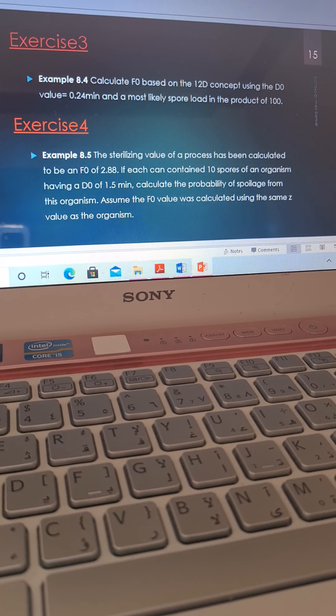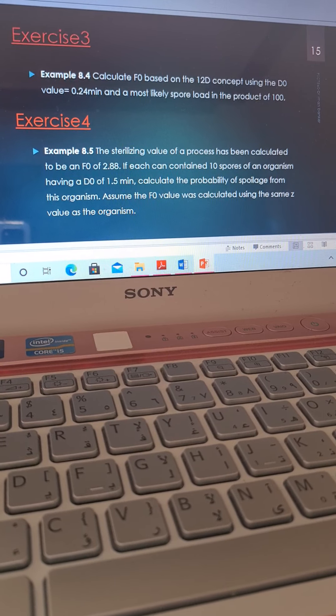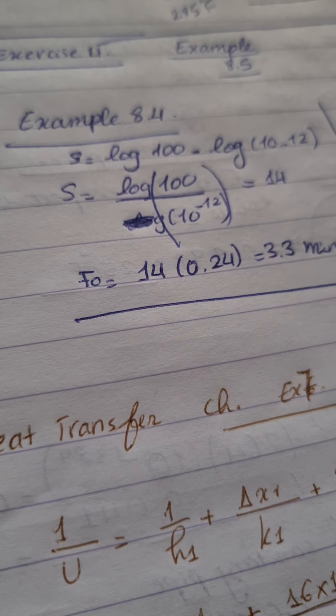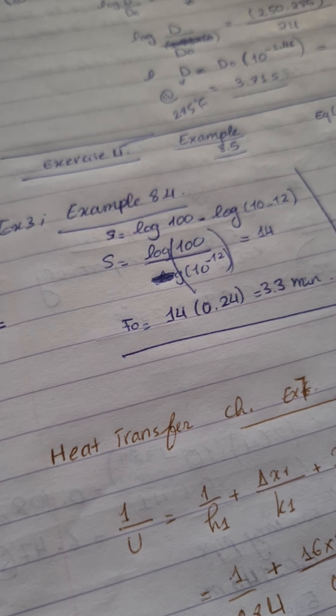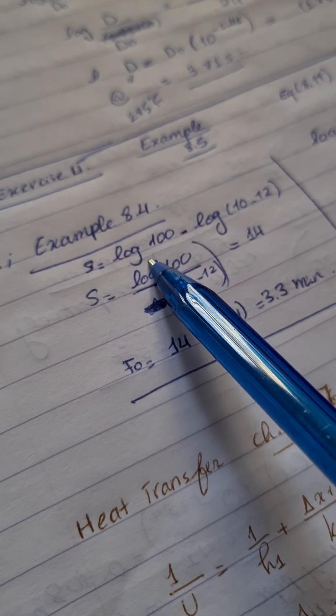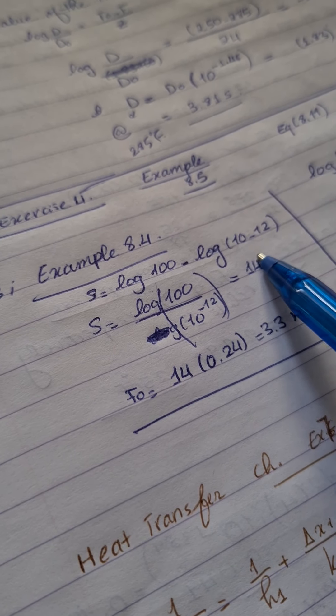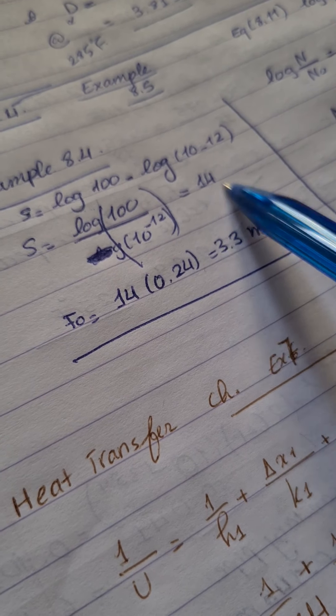And then the N would be a decrease by 12D, which is 10 to the power of minus 12. Then I write it as here, S equals log 100 over 10 to the power of minus 12. Or we can write it in the following way, log 100 minus log 10 to the power of minus 12. And it is at the end equal to 14.